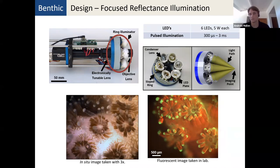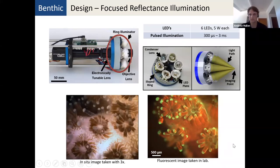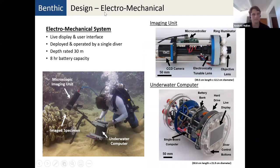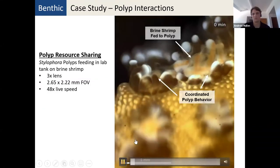We use a ring illuminator with intense light for short exposures to prevent motion blur. Here's an in-situ image of corals. We can also replace the lights with blue lights to look at fluorescence — replacing broadband lights with blue lights and using a filter. Here I'm diving and using an underwater computer to control the whole microscope setup.